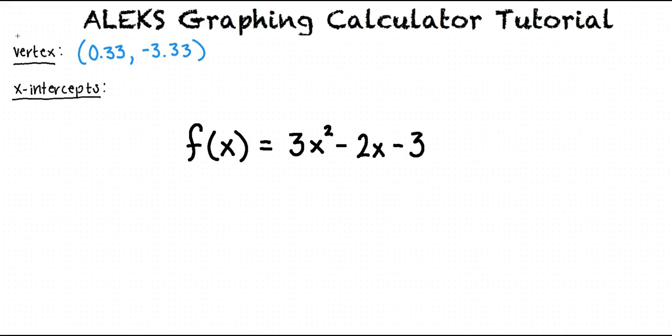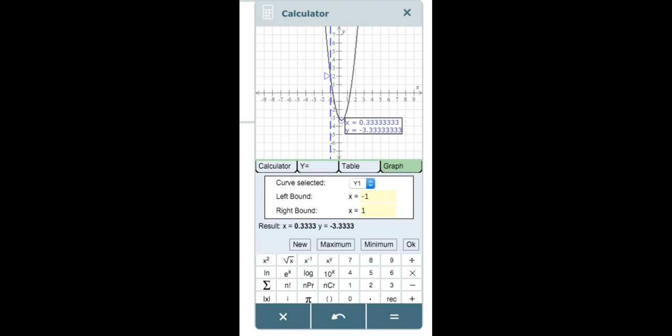Next we will find the x-intercept or intercepts. By looking at the graph we can see that the parabola crosses the x-axis in two places, meaning that there are two x-intercepts.